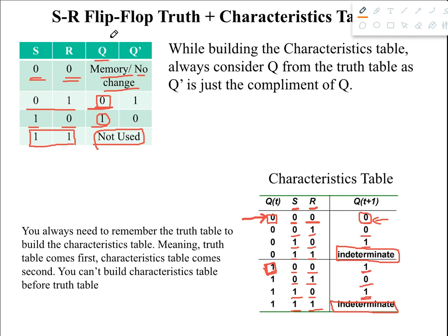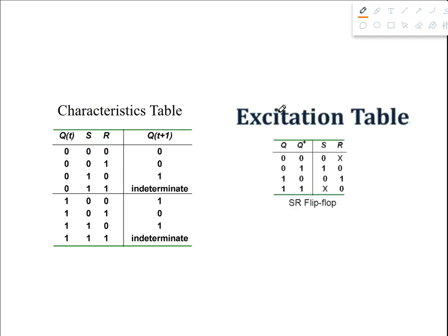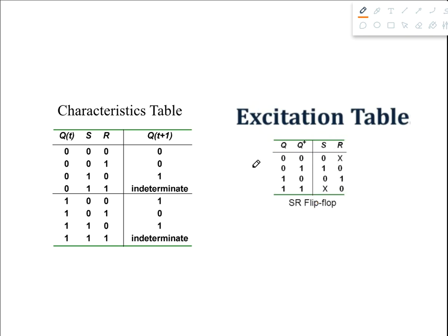This is the overall characteristic table for SR flip-flop, built using the truth table. Now we are going to build the excitation table based upon the characteristic table. In the excitation table there are two parts: in the left part we write the present state and next state — Q and Q⁺ — and in the right part we write the flip-flop inputs S and R. With two variables on the left there are four combinations: zero-zero, zero-one, one-zero, and one-one.